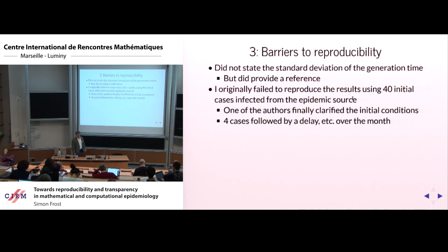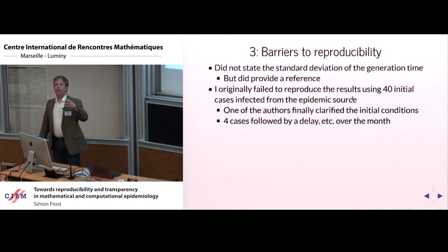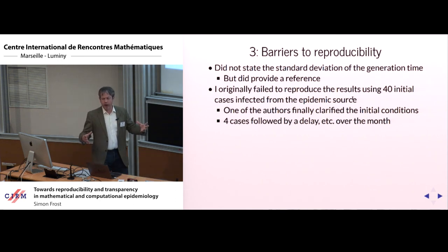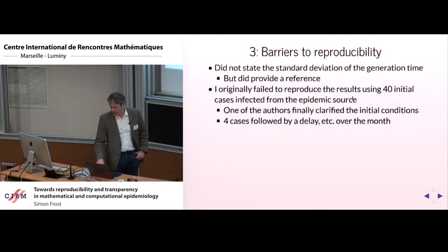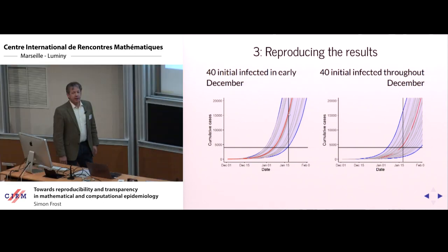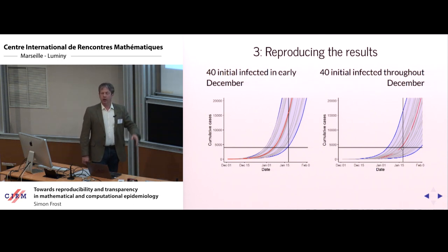One of the authors finally clarified: rather than having 40 people at time zero, they had 40 people introduced spread out over a month — assuming spillover was a constant process spread over a long period, rather than lots of initial cases. That gives very different results. My original attempt, starting with 40 people on December 2nd, produced over 15,000 individuals by the 18th. Whereas if I spread out the infectives as they did, the results are not exact but broadly comparable, assuming an R0 of around 2.5.